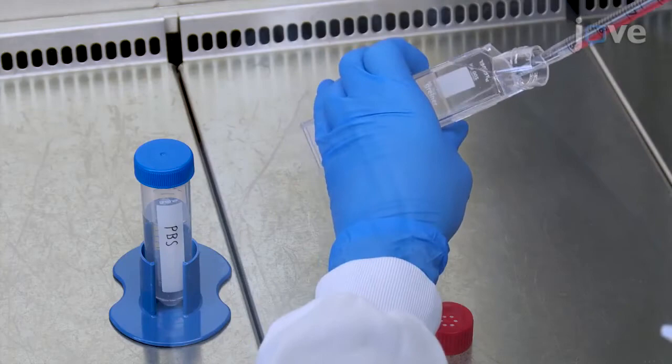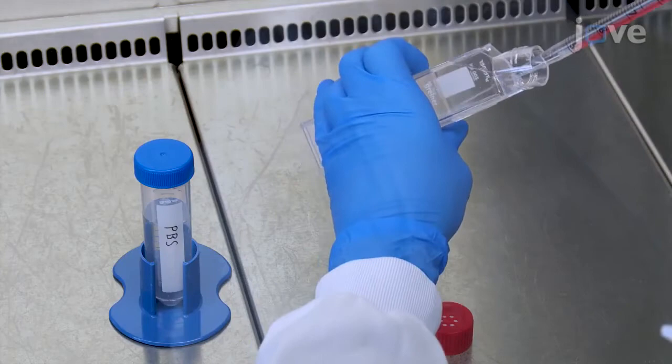Add fresh medium to the cells every 2-3 days. After the cells reach 70% confluency, wash them with 10 milliliters of PBS and detach with 3 milliliters of trypsin EDTA at 37 degrees Celsius.